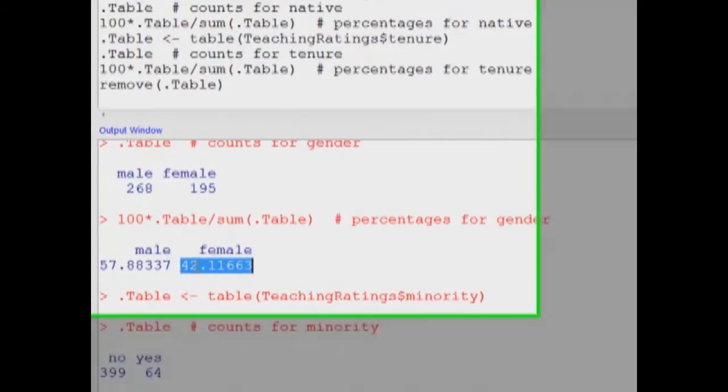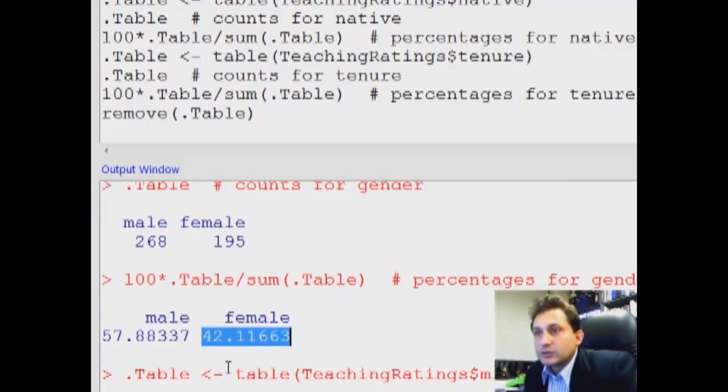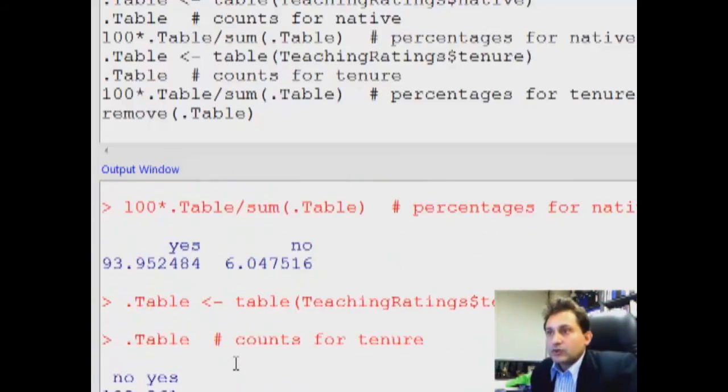This is slightly different from what we have in the paper, because in the paper, this percentage of female instructors was calculated for 94 instructors, and here this is calculated for 463 courses, knowing that some of the professors taught more than one course, and hence that's the reason behind the difference between the two. So this is how you do it.